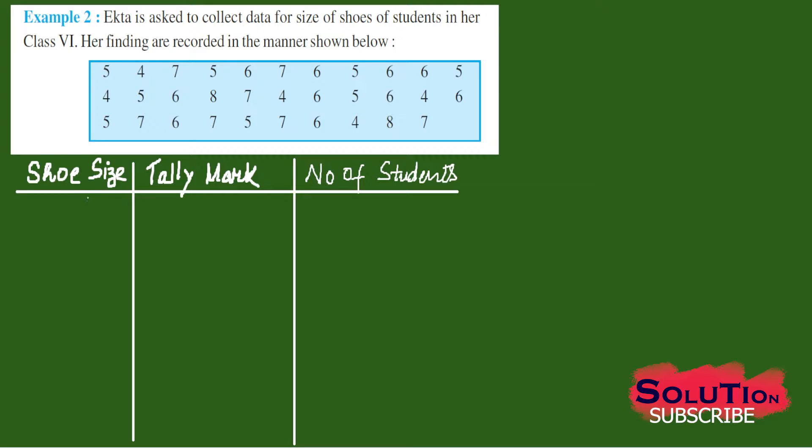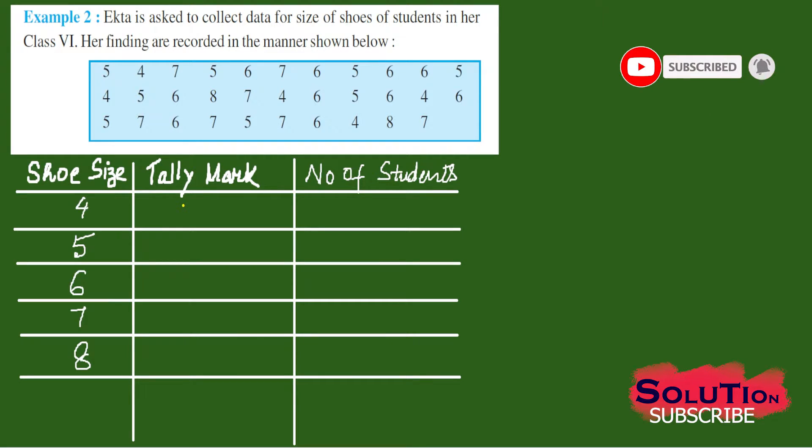So in the shoe size we will be writing 4, 5, 6, 7, 8. The highest number is 8 only, so up to 8 we will be writing starting from 4. So we have shoe size that is 4, 5, 6, 7, 8 and now we will be using tally mark and after that number of students we will calculate here.